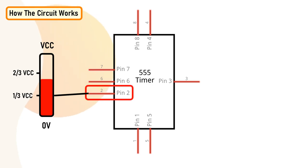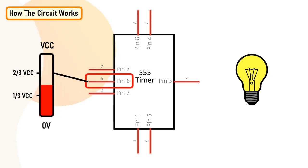When pin number 2 of the IC detects voltage less than one third of the supply voltage, it turns on the output. When pin number 6 detects voltage more than two third of the supply voltage, it turns off the output.